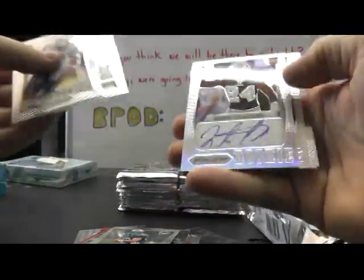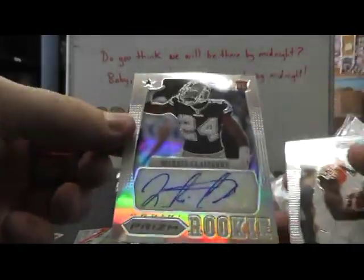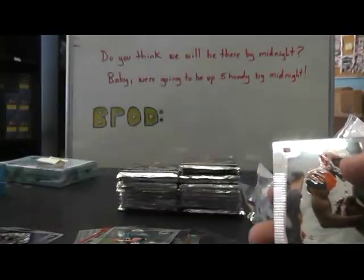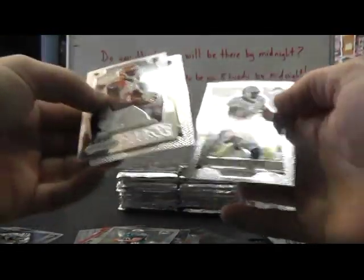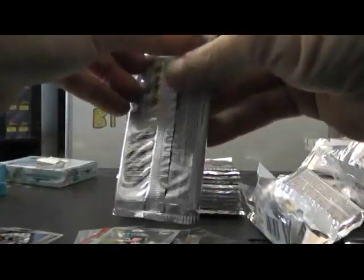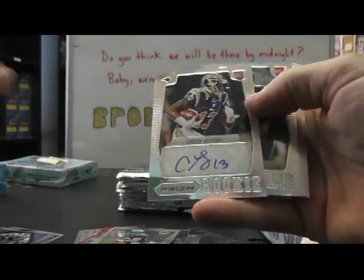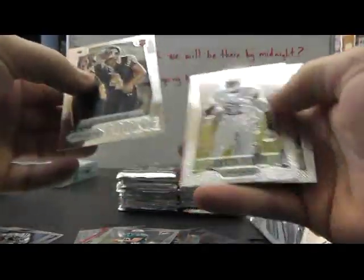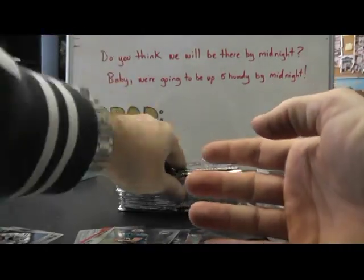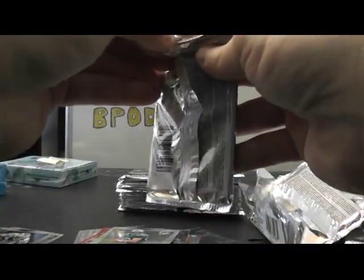Harrison Smith rookie. I think that's a Morris Claiborne Prism autograph, that one's numbered to 99. Mohammed Sanu. Chris Givens rookie autograph.